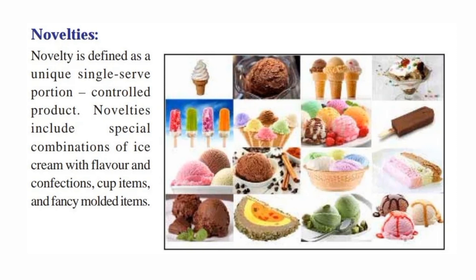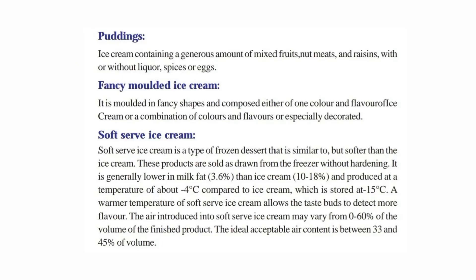Novelties include special combination of ice cream with flavor and confections, cup items and fancy molded items. Pudding is defined as ice cream containing a generous amount of mixed fruits, nut meats and raisins, with or without thickener, spice or eggs.